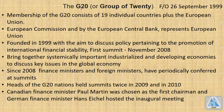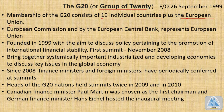G20, or Group of 20, is a group which consists of 19 individual countries who are the major economies of the world, plus the European Union. It's important to note that it is a group of 19 individual countries — not 20 — plus the European Union.